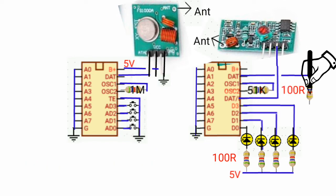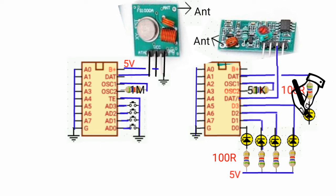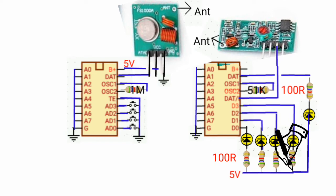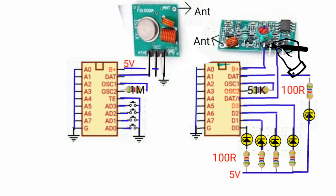Connect the opposite side of the resistor to the cathode of an LED. Then connect the anode of the LED to the positive side of the battery. Then connect pin 18 of the decoding IC to pin 1 of the receiver and connect to the positive 5 volt supply.